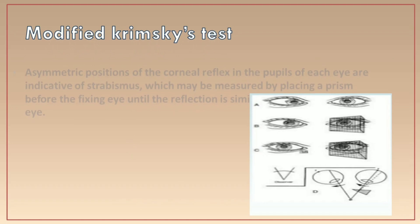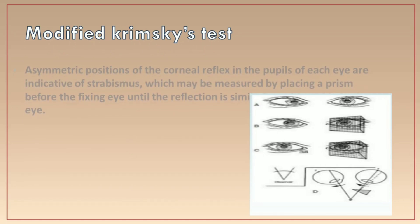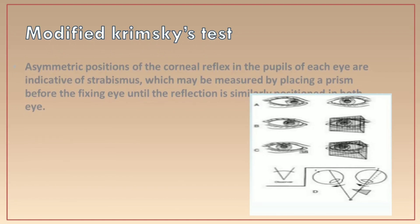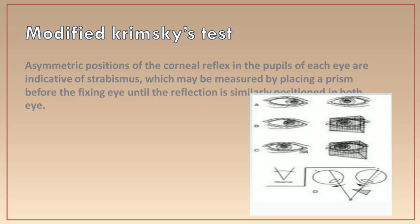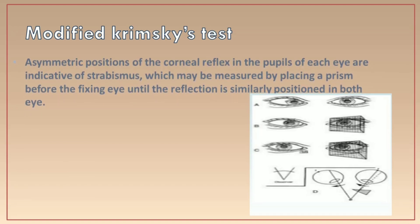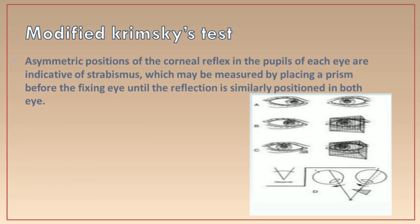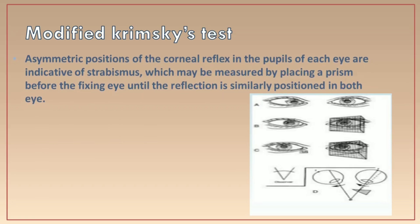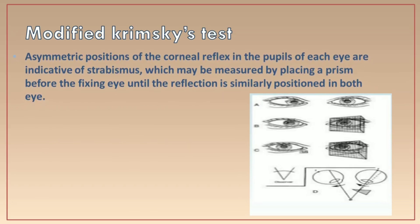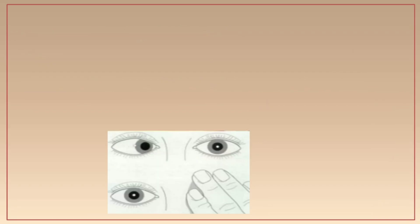In the modified Krimsky test, the prism is placed on the good eye, as shown in the pictures. The prism strength is slowly increased until the corneal reflex is in a similar position in both eyes. A torchlight is used in both the Krimsky and modified Krimsky tests.